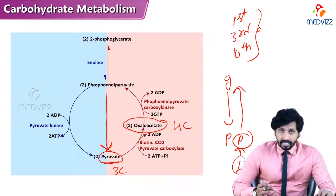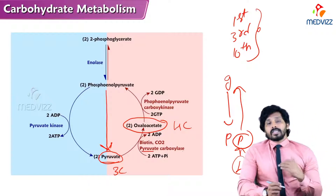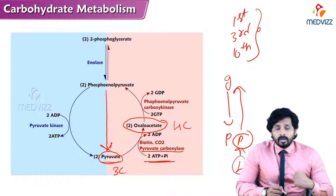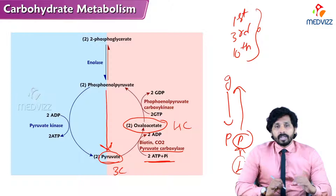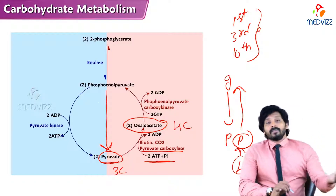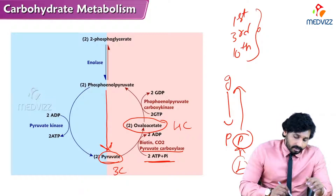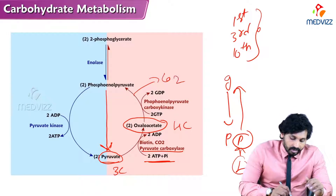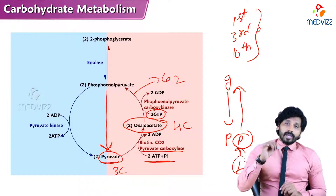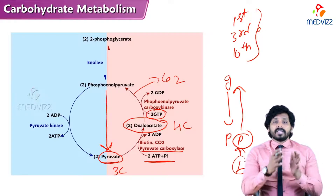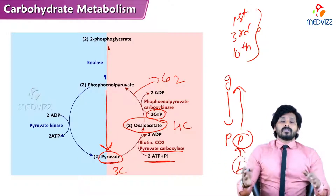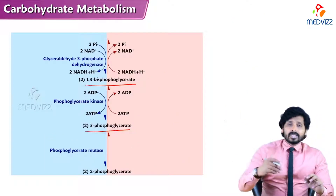Pyruvate is converted to oxaloacetate by the enzyme pyruvate carboxylase — carboxylases are enzymes that add a carbon group. Two ATPs are consumed in this step, converted to two ADPs. Then oxaloacetate is converted to phosphoenolpyruvate by removing one carbon as CO₂, catalyzed by phosphoenolpyruvate carboxykinase (PEPCK), consuming two GTPs. So a total of four ATPs are required to form phosphoenolpyruvate via oxaloacetate from pyruvate.